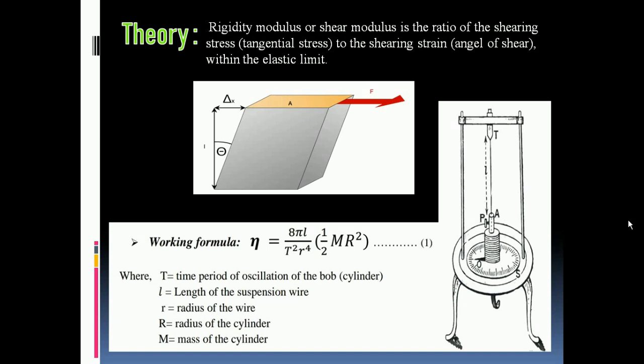Capital R denotes the radius of the cylinder and capital M stands for the mass of the cylinder. So from this theory it is quite clear that we have to measure the time period, length of the wire, radius of the wire, radius of the cylinder, and the mass of the cylinder. If we can get all these values, then we can put them in this formula to get the rigidity modulus.